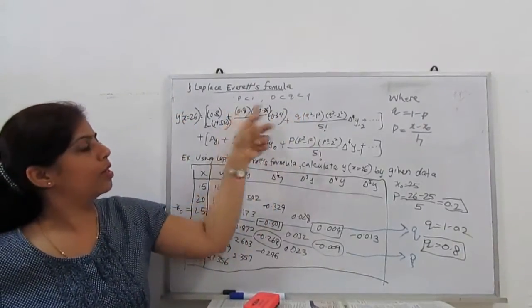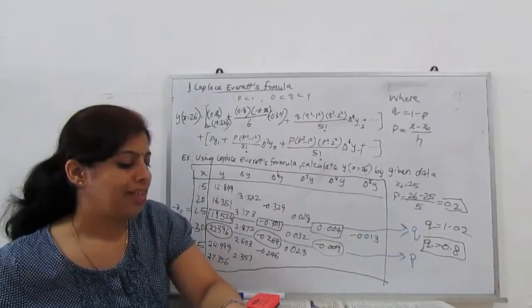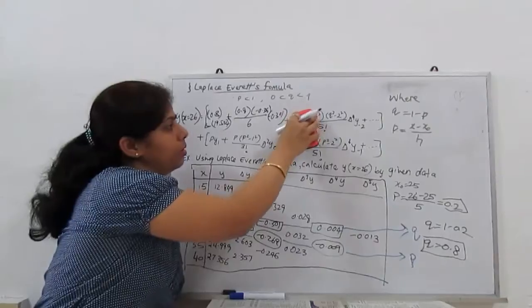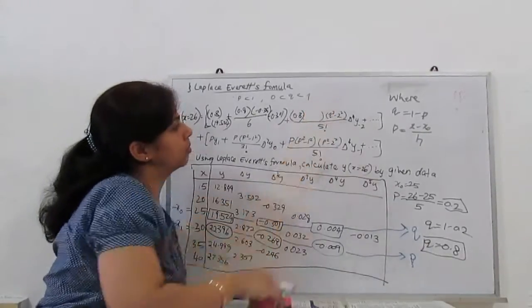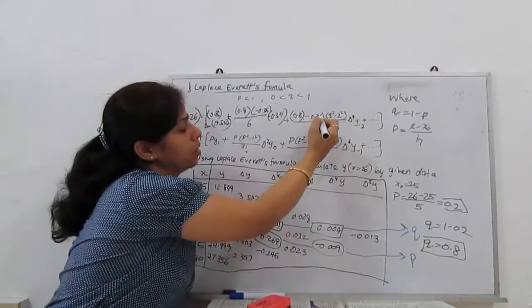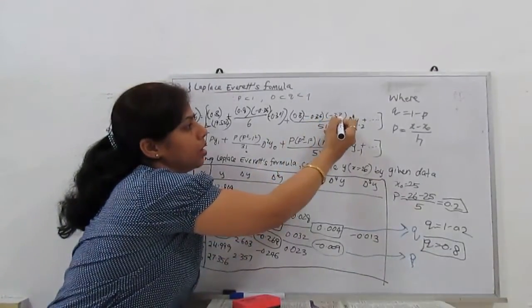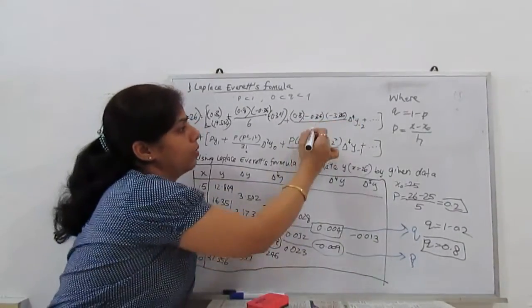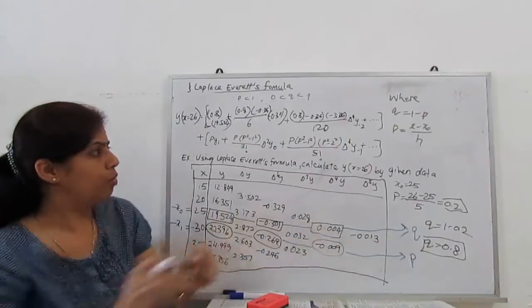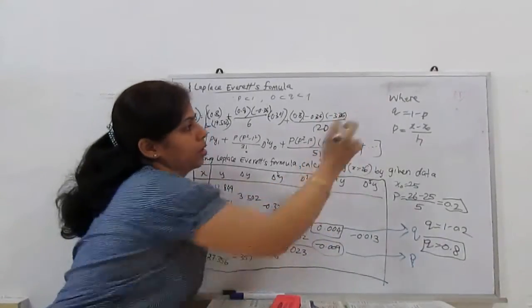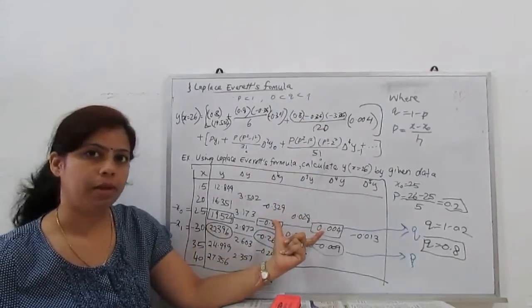Next, same Q is 0.8, Q² - 1² is 0.36, Q² - 2² is given by minus 3.36. So I will substitute: 0.8 - 0.36 - 3.36 factorial 5 is 120. You can put as factorial 5 and calculate also. Next value at del⁴ Y₋₂ is 0.004. I will substitute here 0.004. That's all because we have the table until this term.